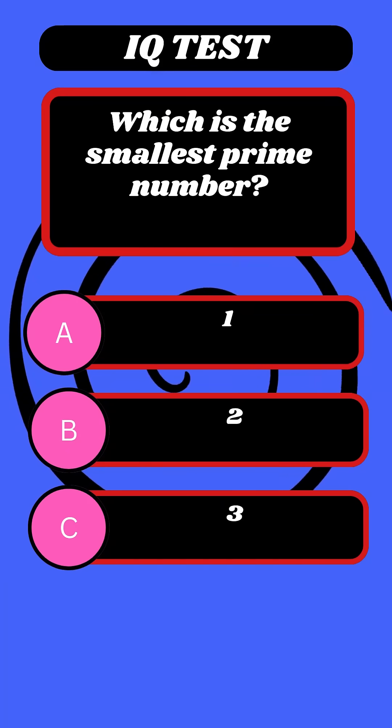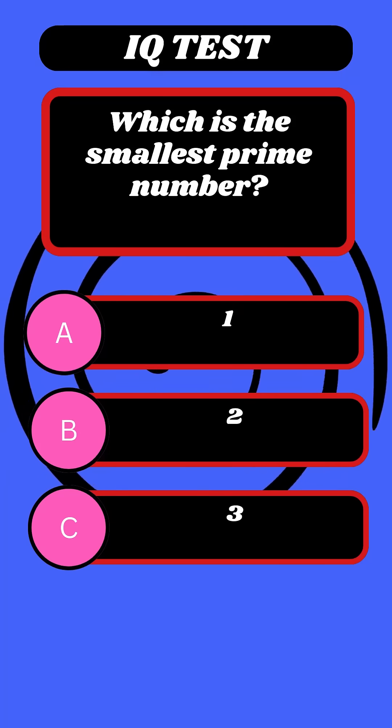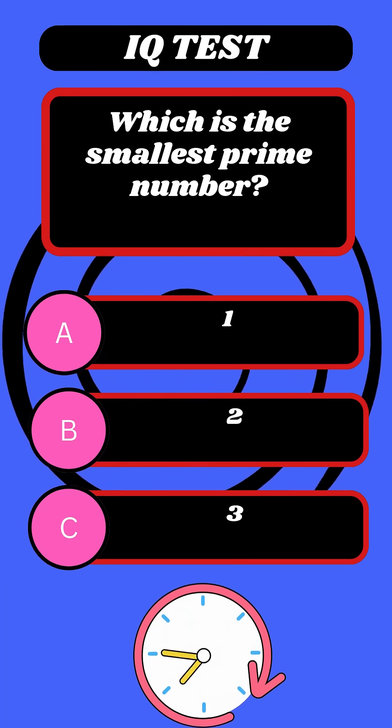Question 5. Quick math. What is the smallest prime number? Times up. Answer. Two.